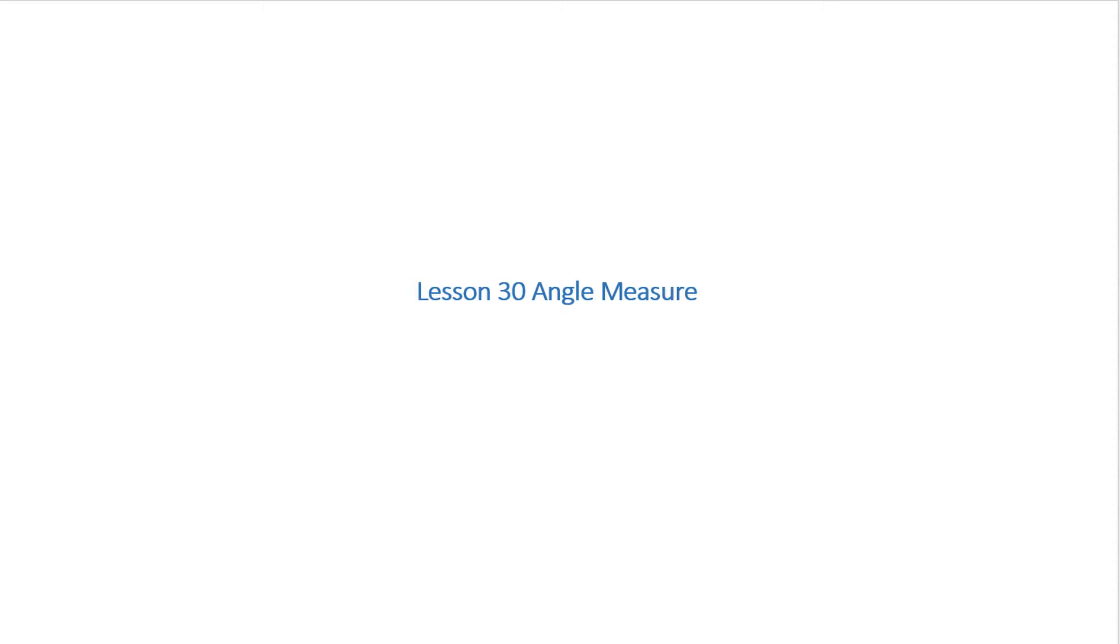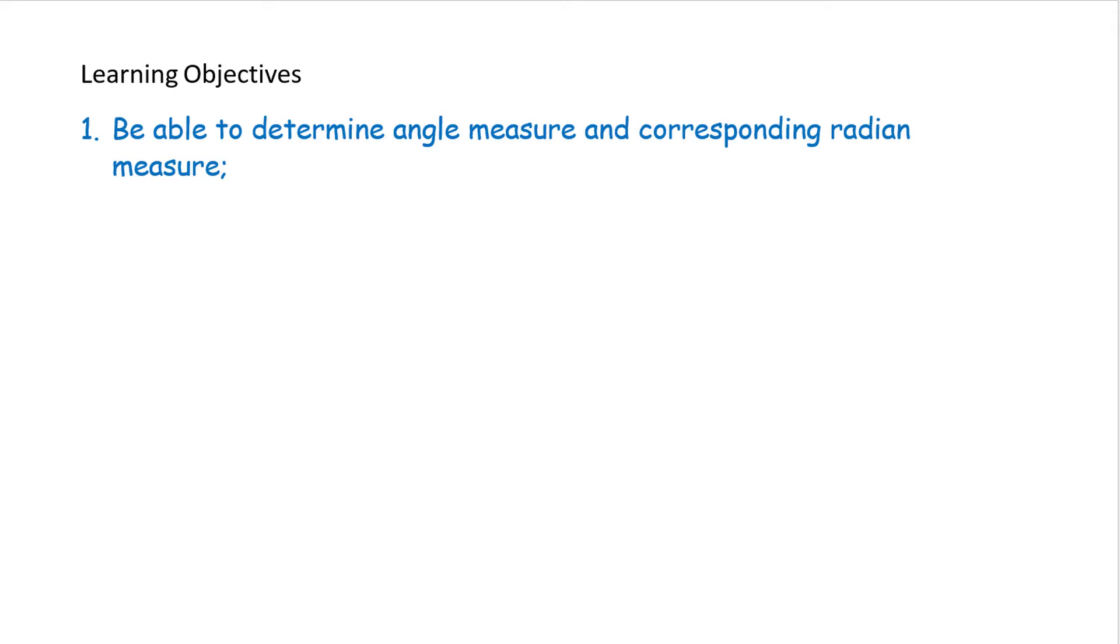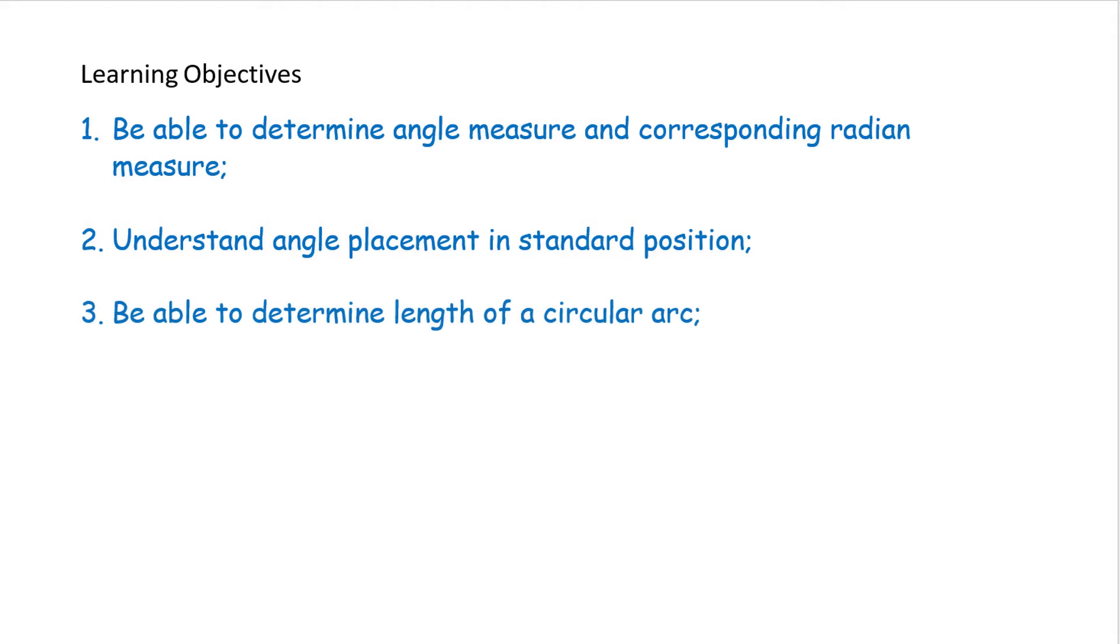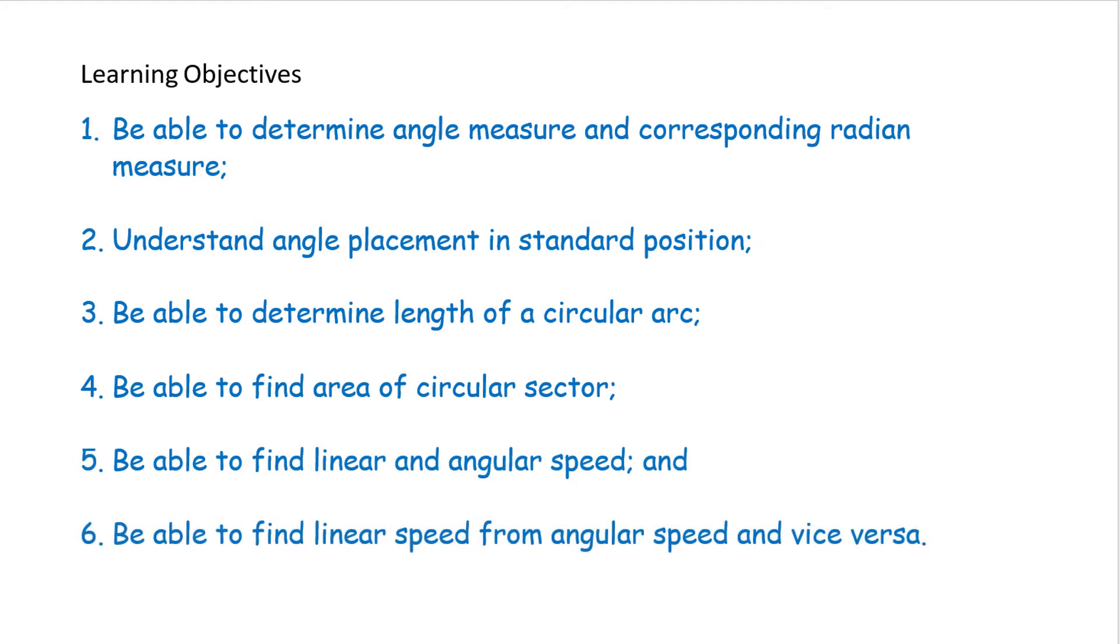The objectives of this lesson are: 1. Be able to determine angle measure and correspond in radian measure. 2. Understand angle placement in standard position. 3. Be able to determine length of a circular arc. 4. Be able to find the area of a circular sector. 5. Be able to find linear and angular speed. 6. Be able to find linear speed from angular speed and vice versa.